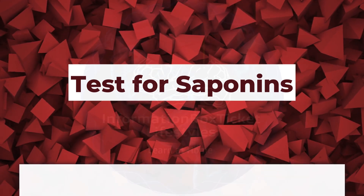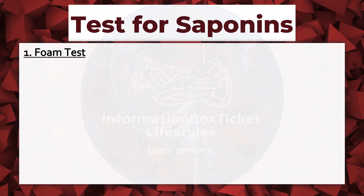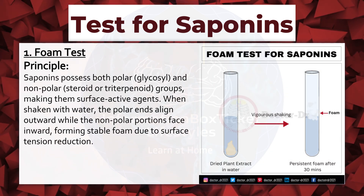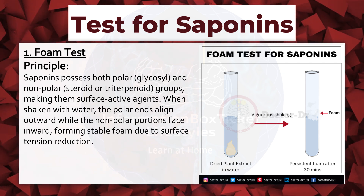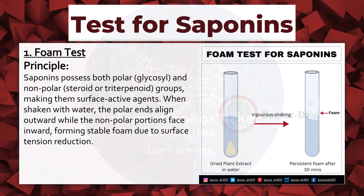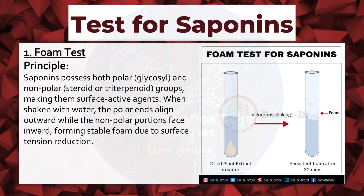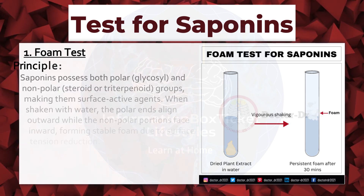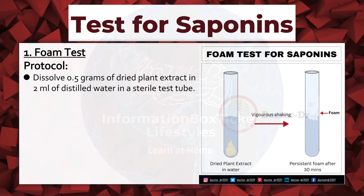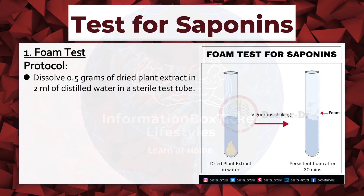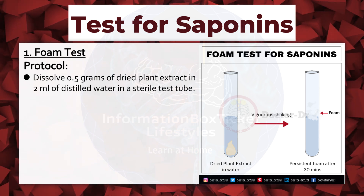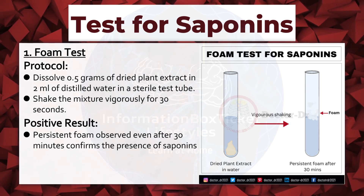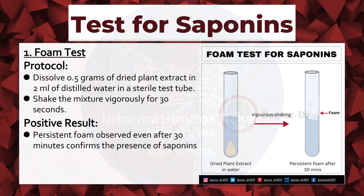Test for Saponins. Foam Test. Principle: saponins possess both polar (glycosal) and nonpolar (steroid or triterpenoid) groups, making them surface-active agents. When shaken with water, the polar ends align outward while the nonpolar portions face inward, forming stable foam due to surface tension reduction. Protocol: dissolve 0.5 grams of dried plant extract in 2 ml of distilled water in a sterile test tube and shake the mixture vigorously for 30 seconds. Positive result: persistent foam observed even after 30 minutes confirms the presence of saponins.